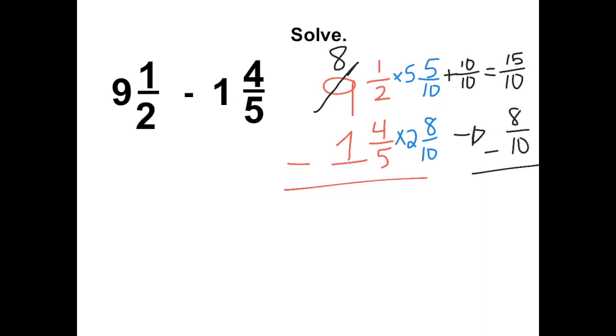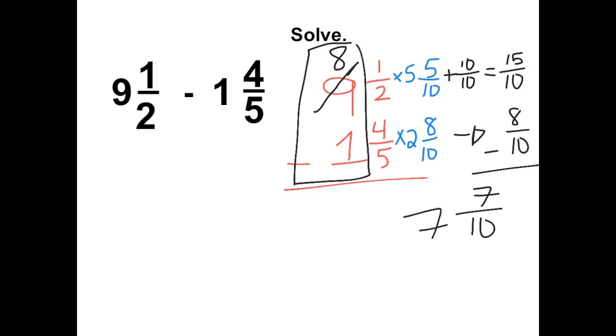Now we can subtract. 15 over 10 minus 8 over 10 gives us 7 over 10. Now we can subtract our whole numbers: 8 minus 1 gives us 7. So our answer is 7 and 7 tenths.